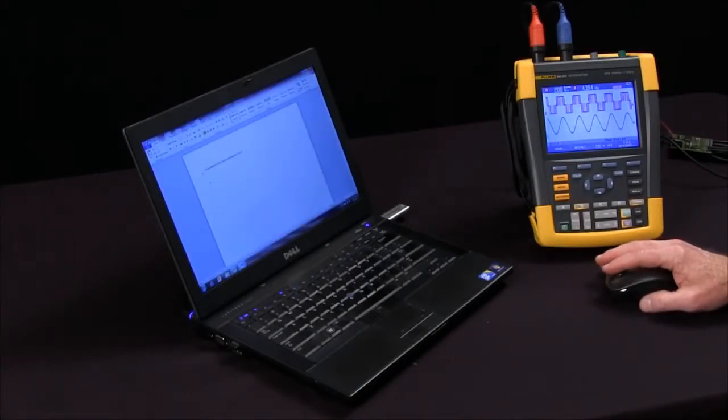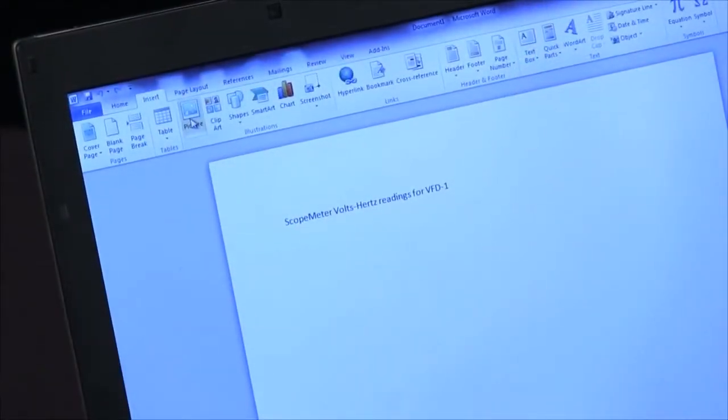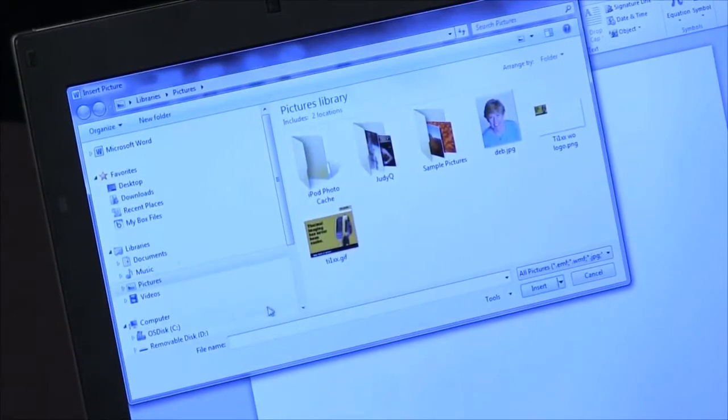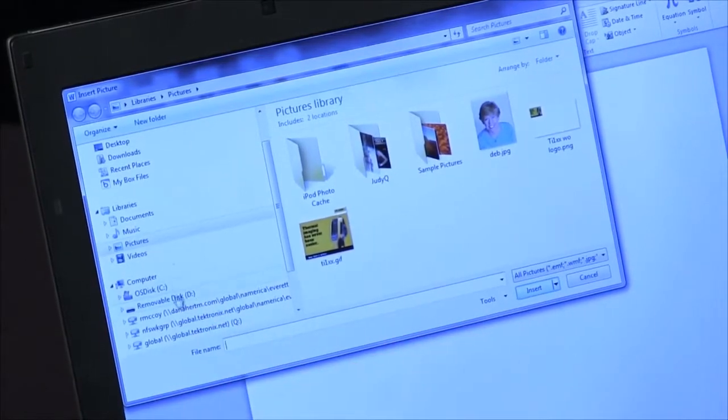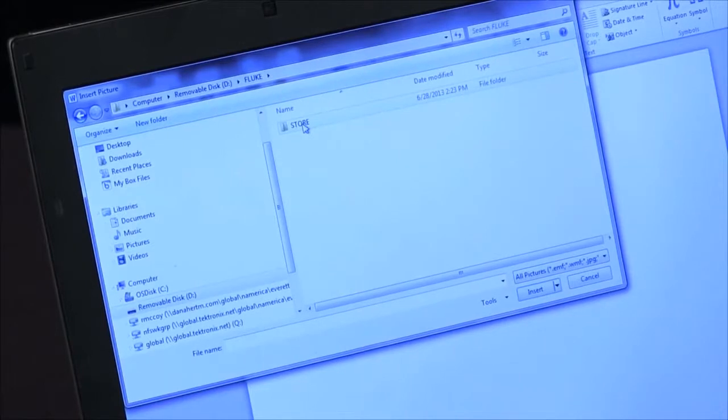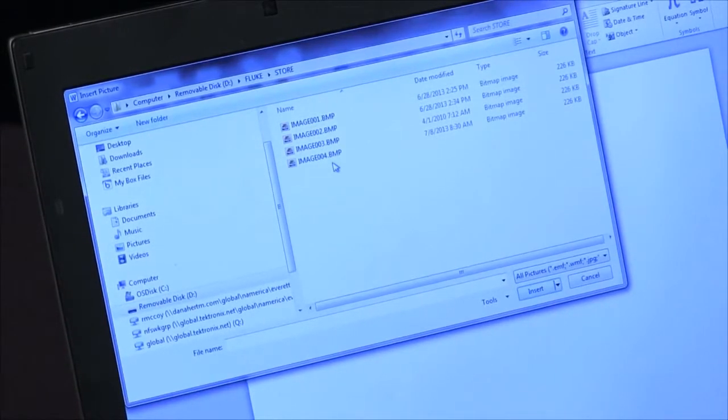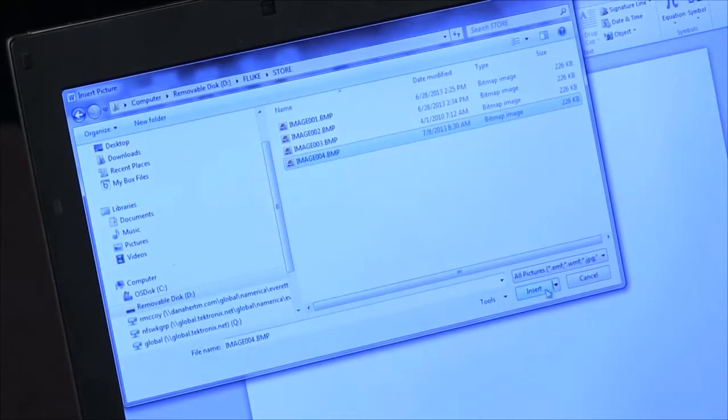I can have a report template already opened up, and say we want to import a picture, come down to my removable disk, go to the Fluke folder, and I can pull that bitmap image and say Insert.